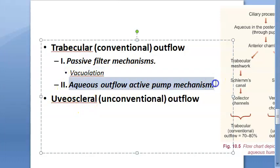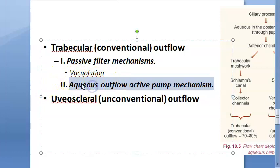For the active pump mechanism in trabecular outflow, there is the aqueous outflow pump, the trabecular meshwork aqueous valve mechanism, and outflow pump systems for humor flow from Schlemm's canal to collector channels and episcleral veins. Aqueous veins also play a role, and pressure gradient pushes it out.